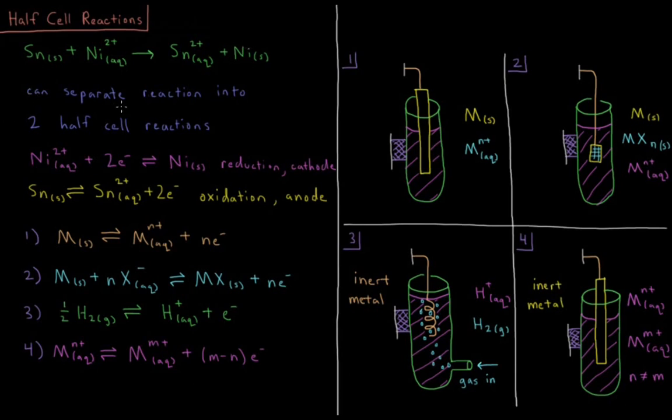We can separate this reaction into what are called two half-cell reactions. The first one would be nickel 2+ in aqueous solution plus two electrons reacting to form nickel solid. This is reduction, something that would occur at the cathode on the right side of our electrochemical diagram. We have tin solid reacting to form tin 2+ aqueous cations plus two electrons. It loses two electrons, getting oxidized, and this is what occurs at the anode on the left side of our electrochemical diagram.